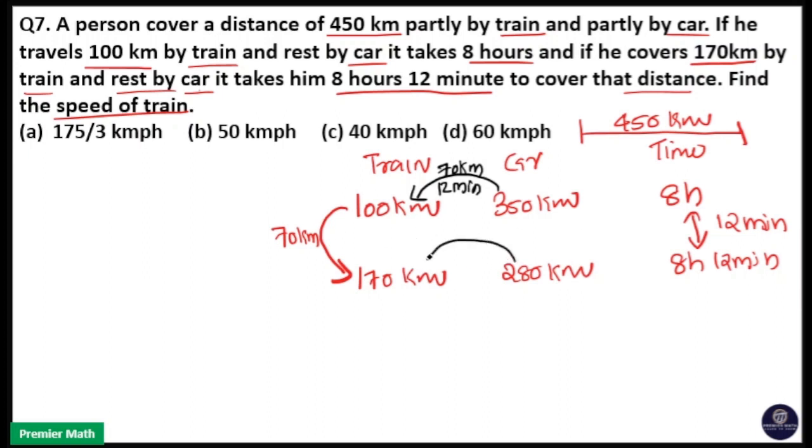If he transferred total 280 km, that's 70 times 4 equals 280. So if he transferred total 280 km, his time increment will be 12 times 4, that is 48 minutes.